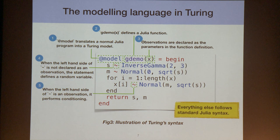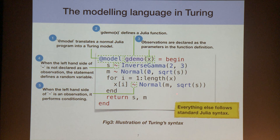Everything other than the tilde notation is just Julia code. You can plug in a for loop, a function defined outside, or even a third-party library inside a Turing model. This is the compiler component of Turing.